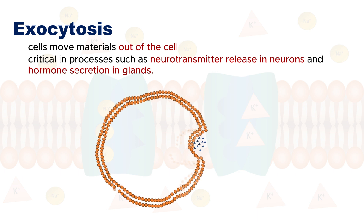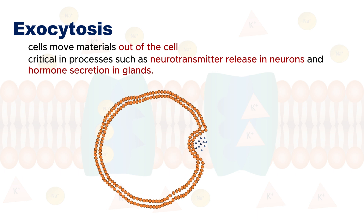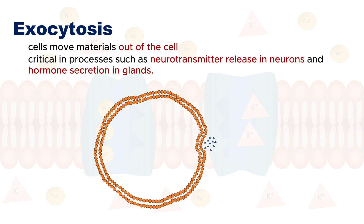Exocytosis releases vesicle contents into the extracellular environment. It is critical in processes such as neurotransmitter release in neurons and hormone secretion in glands.